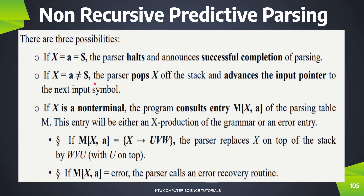In the second case, if x is equal to a but it is not the dollar symbol — that is, the stack top and the buffer point are the same terminal symbol — then the parser pops x from the stack. The stack top is the same as x and the input buffer is the same terminal symbol. Both are the same as id, and it proceeds to the next place in the input buffer.